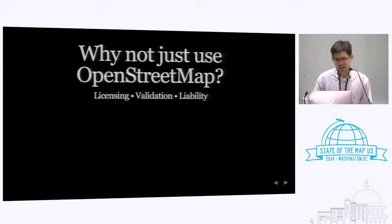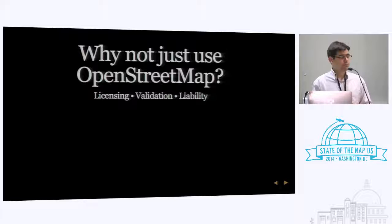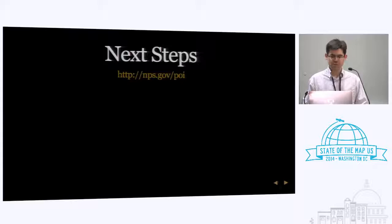But why don't we just use OpenStreetMap? You've probably heard a lot about licensing this weekend. We have to use public domain for all of the government maps, and there are a few other things holding us up. Data validation is one of the big ones — we need to make sure that people don't go in and vandalize or add things, or maybe move a park boundary so they can build their shed there. Everything we put up on the government website we are somewhat liable for, so we need to make sure we do that correctly.